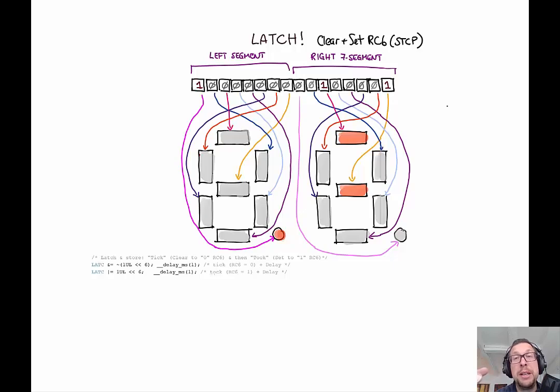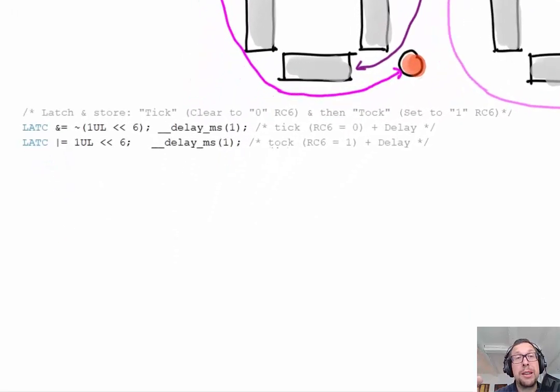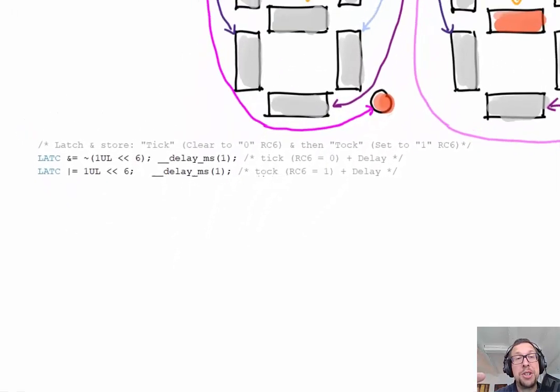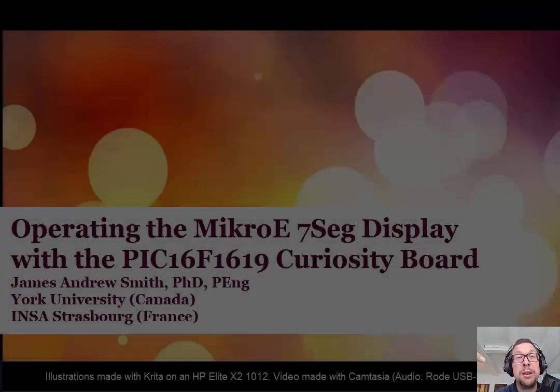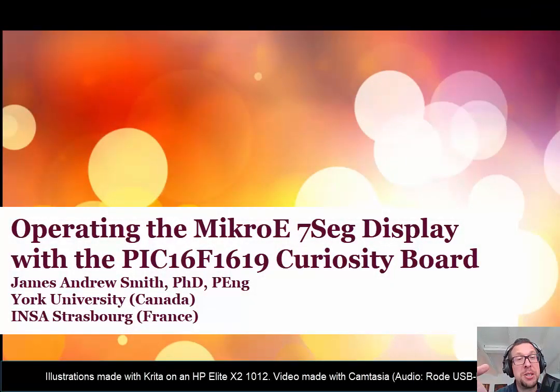So the latch clock is STCP or RC6 on the PIC16. We do it like this with the latch C commands. And there you have it. That's how we put data on the seven segment display.